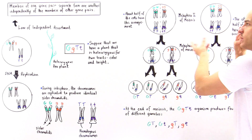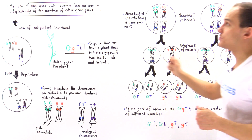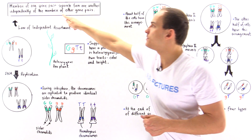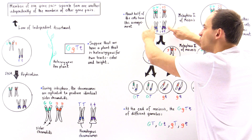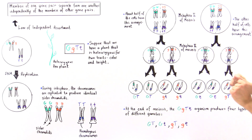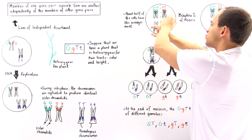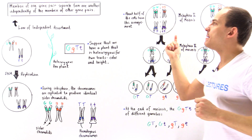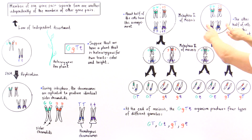This is where we discuss the law of independent assortment. The law tells us that members of one gene pair separate independently of the members of other gene pairs. So the G/g pair separates independently of the T/t pair. What this means is that within the cell, these two pairs can be arranged one way, or they can be switched — about 50% of cells have one arrangement and the other 50% have the other arrangement.